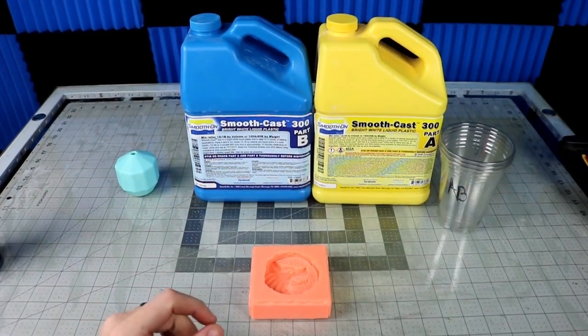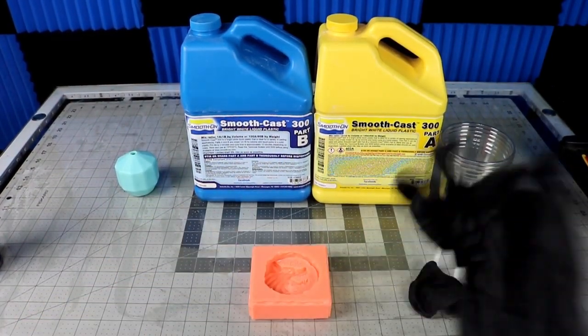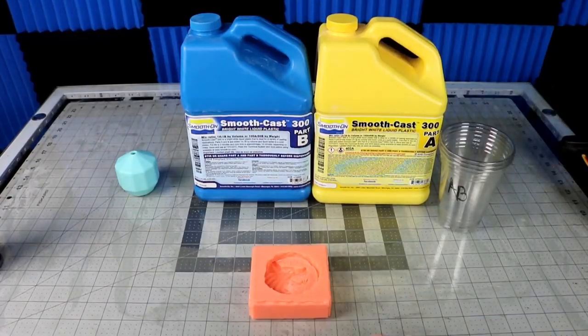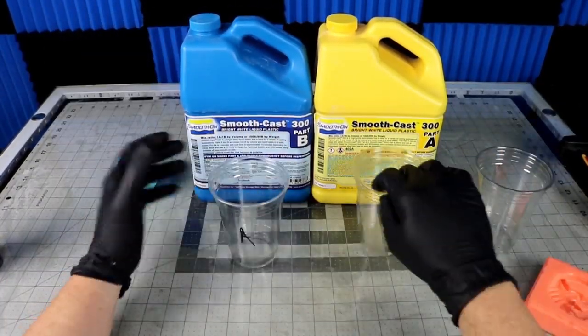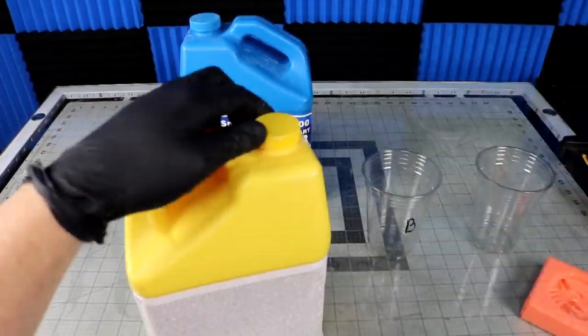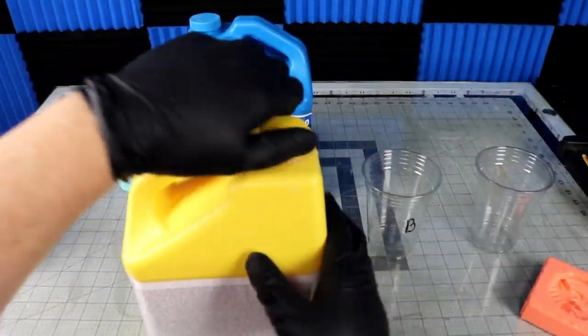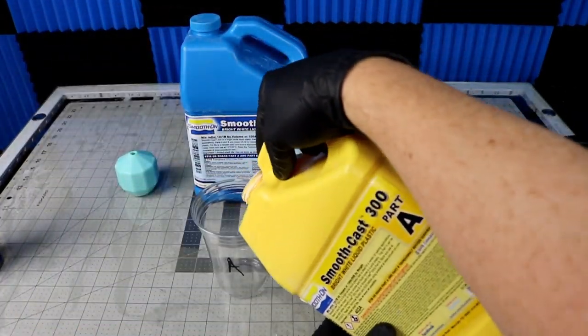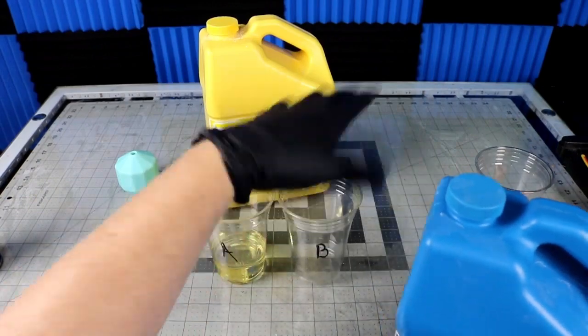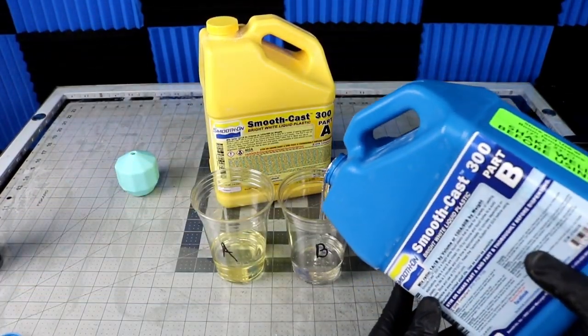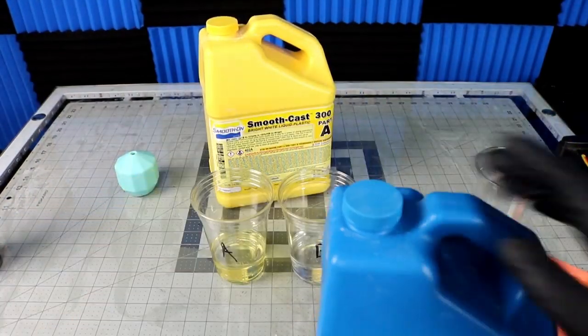Spray a little mold release in the mold to help remove casts and extend the life of the mold. I'm once again using my Smooth Cast 300. I could measure it out with some water or some other liquid to get an exact amount but instead I just keep an extra mold or two handy to pour off any extra that I may have.